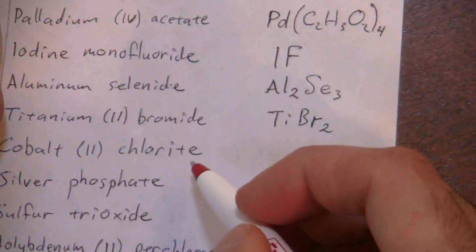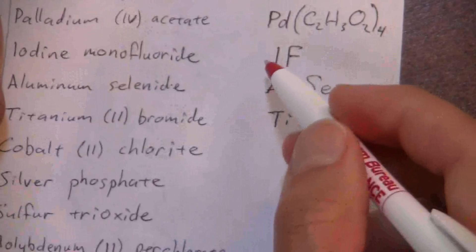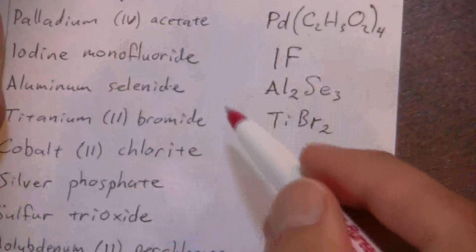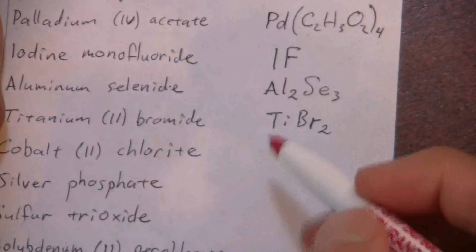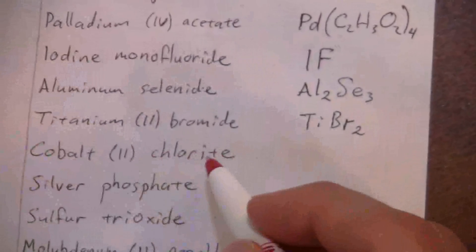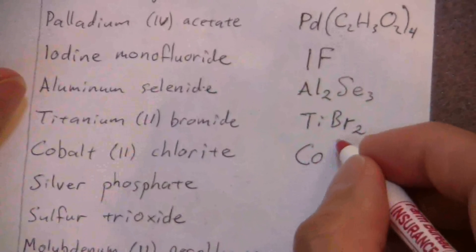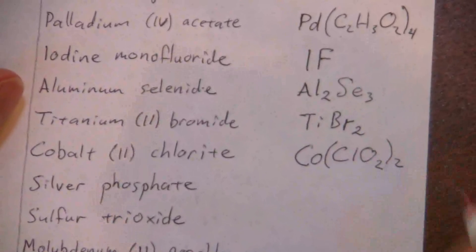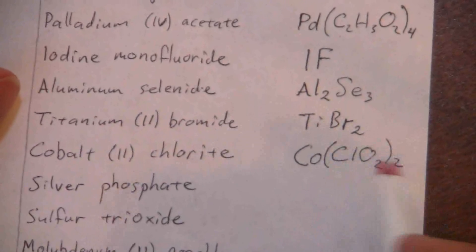This is part of the chlorine oxygen series. We have ClO4 perchlorate, ClO3 is chlorate, then there's chlorite which is ClO2, and hypochlorite which is ClO. Each of those four in that series has a negative one charge. I need two of those negative one charges to balance out. I end up with cobalt and then in parentheses ClO2 subscript 2.